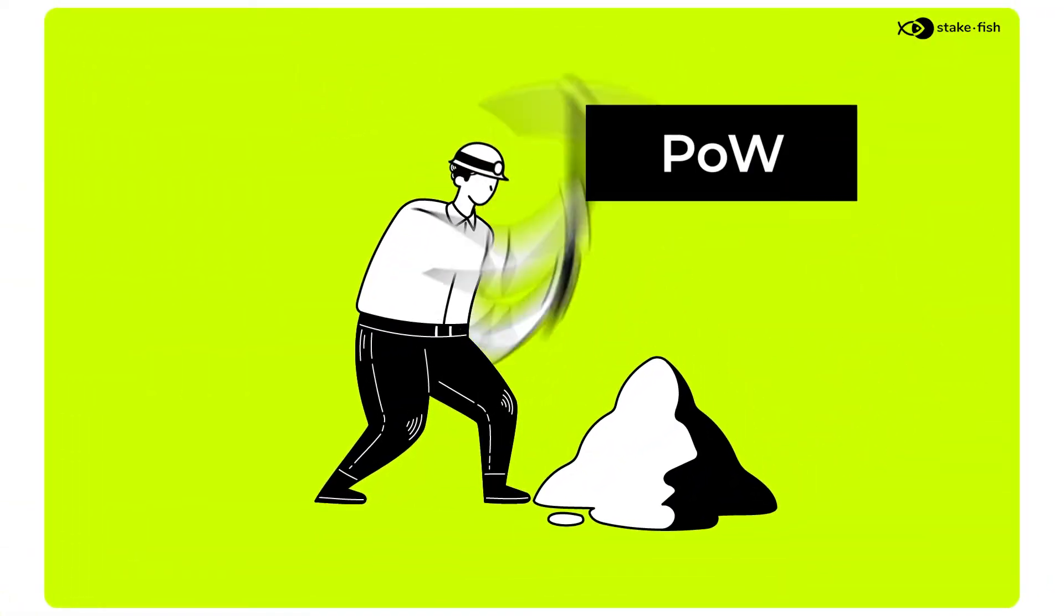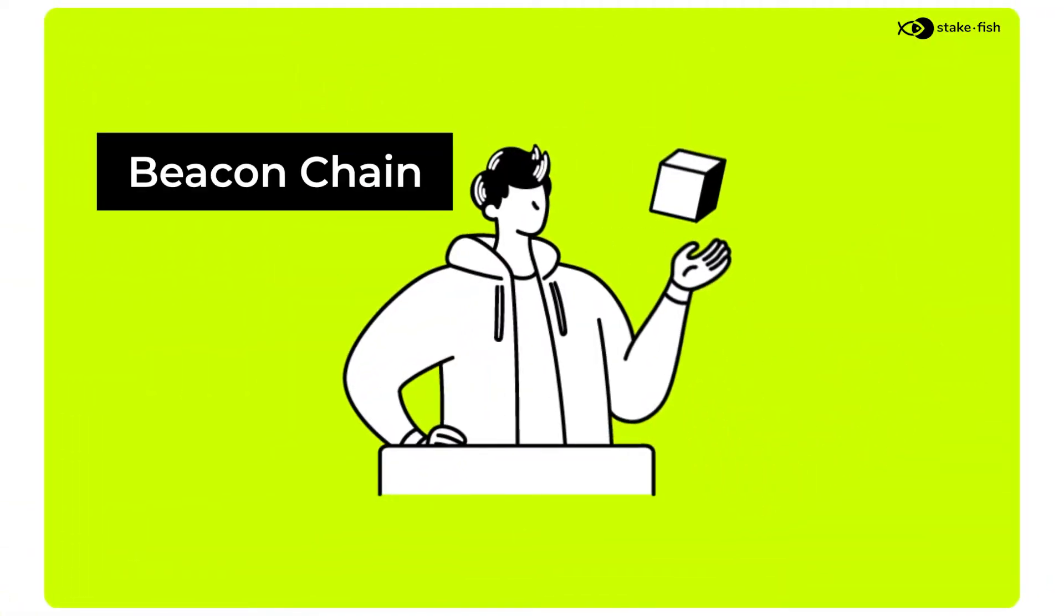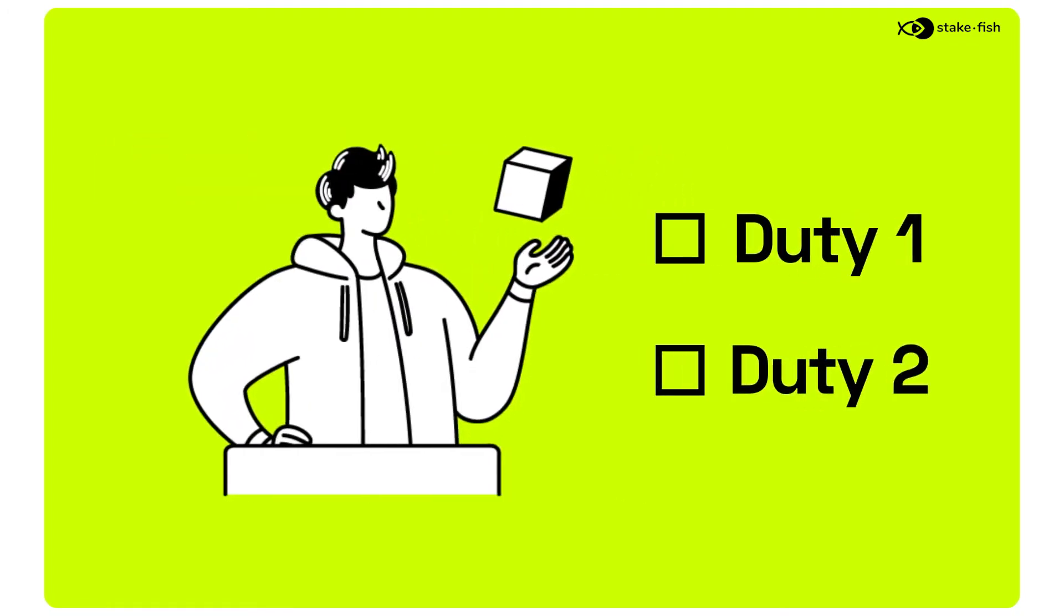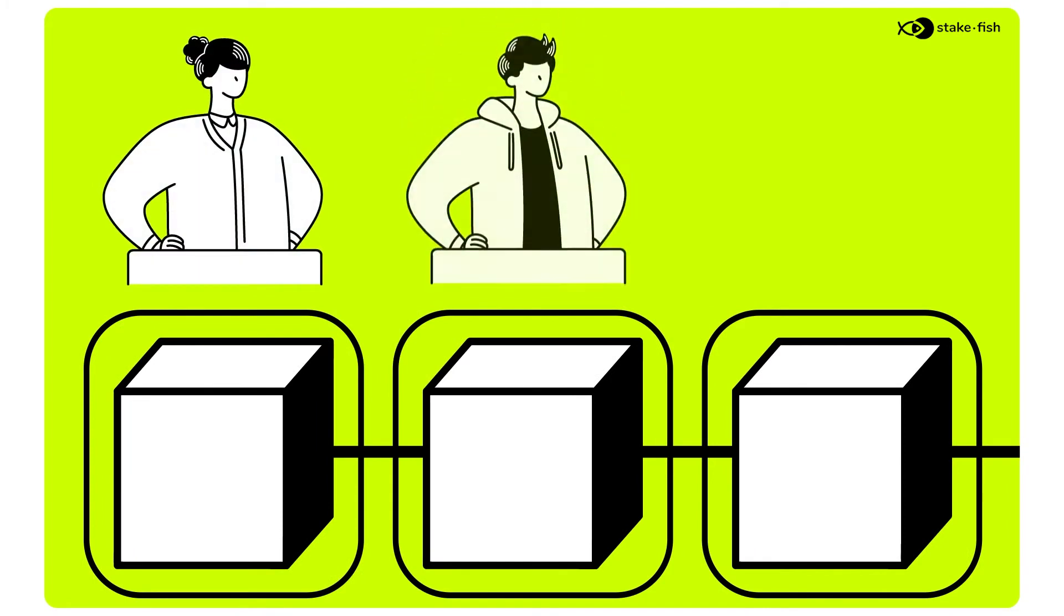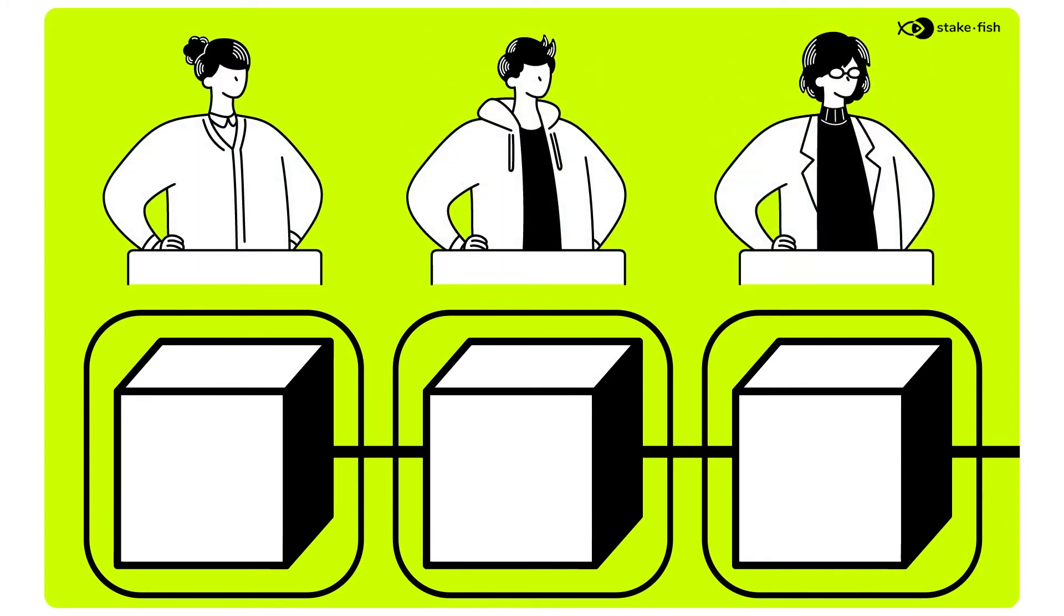While Proof-of-Work had miners, the Bitcoin chain will have validators who conduct two main duties for the network. For each slot, one validator gets pseudo-randomly selected to submit a block. While the selected validator is incentivized to create a block, it can also miss that opportunity.